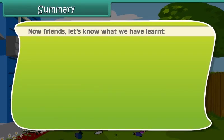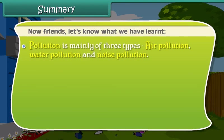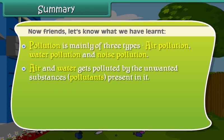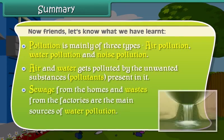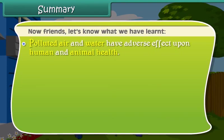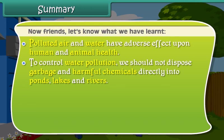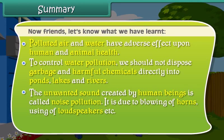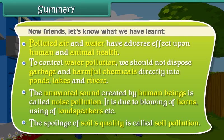Now friends, let's recap what we have learnt. Pollution is mainly of three types: air pollution, water pollution, and noise pollution. Air and water get polluted by unwanted substances — pollutants. Sewage from homes and wastes from factories are the main sources of water pollution. Polluted air and water have adverse effects on human and animal health. To control water pollution, we should not dispose garbage and harmful chemicals directly into ponds, lakes and rivers. The unwanted sound created by human beings is called noise pollution, caused by blowing of horns, use of loudspeakers, etc. The spoilage of soil's quality is called soil pollution.